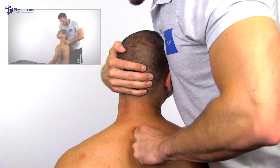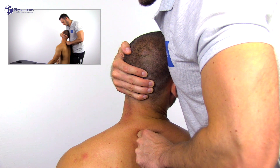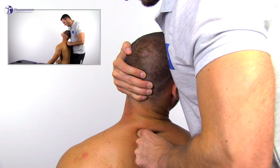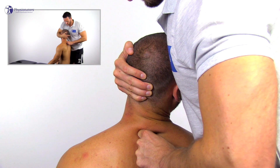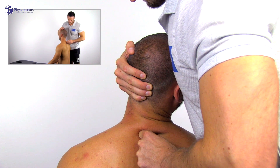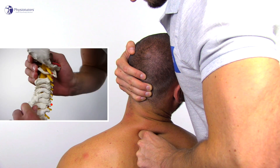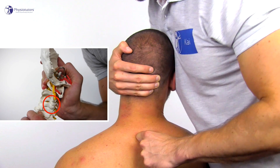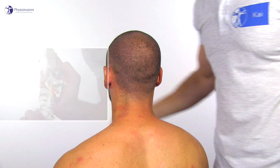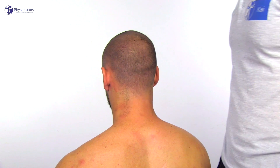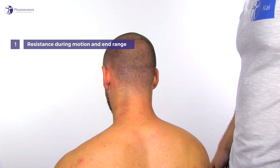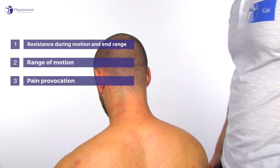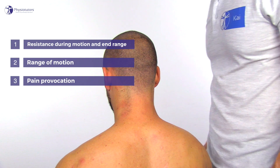Now perform a maximal homonymous 3D movement with equal components of extension, ipsilateral lateral flexion, and ipsilateral rotation. This movement causes maximal compression of the facet joints of C2 till C7 on the ipsilateral side. The whole movement is judged on resistance during motion and at end range, range of motion, as well as possible pain provocation compared to the other side.